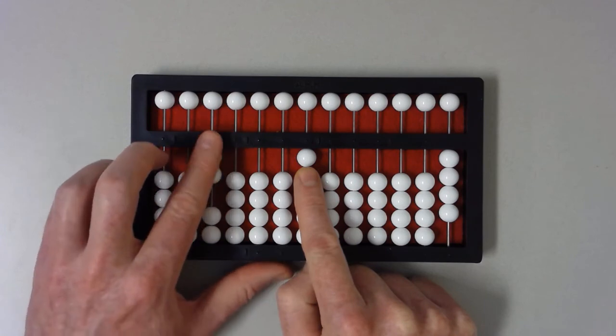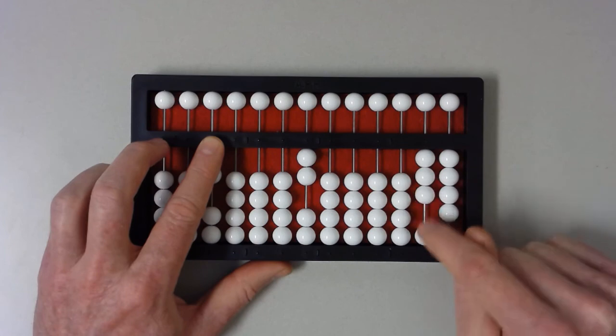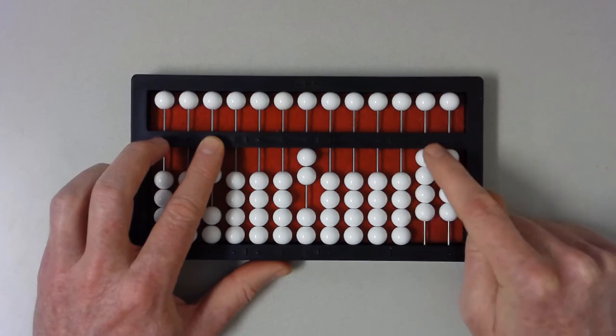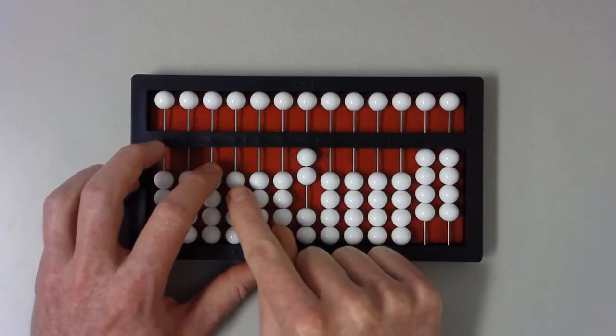Sure, but this time, since the two in the multiplicand, the first number, is in the tens column, we set that four in the tens column of the product. I set a four in the tens column of the hundreds section. That's forty.